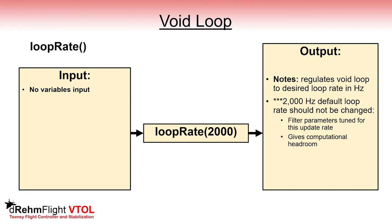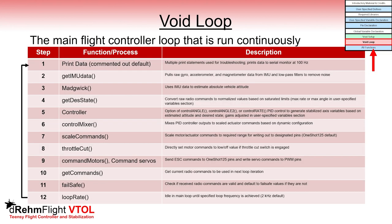Finally, the last function in the void loop is the loop rate function, which is used to regulate the speed of the flight control loop to 2000Hz. This is needed because each loop iteration will take a slightly different amount of time to complete. Having a constant loop rate is important to keep filters and other processes in the flight controller loop stable. It also gives us a lot of unused computation power to add things to the void loop without worrying about slowing it down below 2000Hz. All of these functions we've just talked about are called in the void loop, and you can find each of them at the end of the Arduino script. A simple way to navigate the script is to use Ctrl+F to search for a keyword.